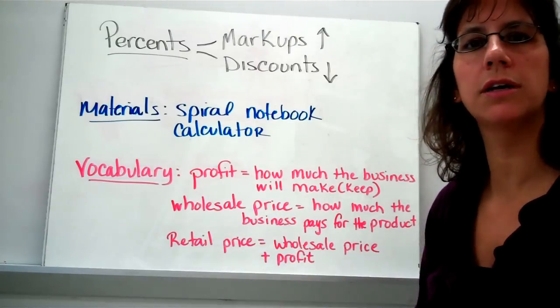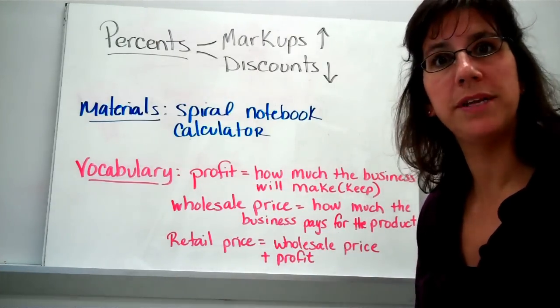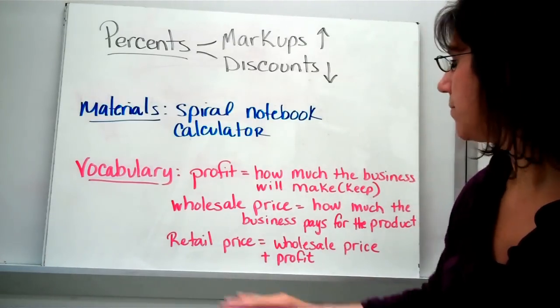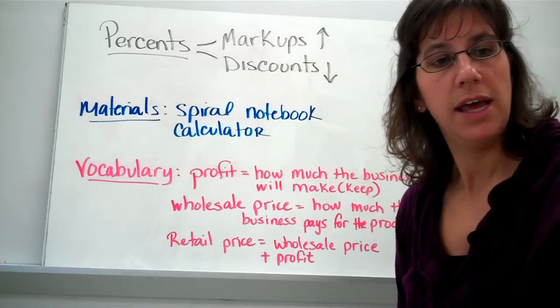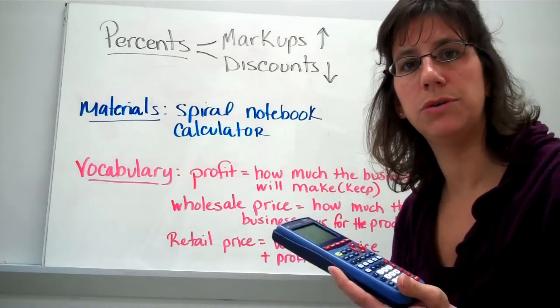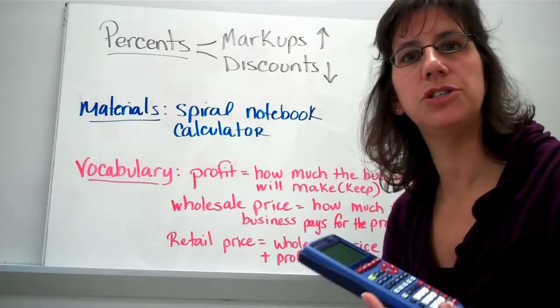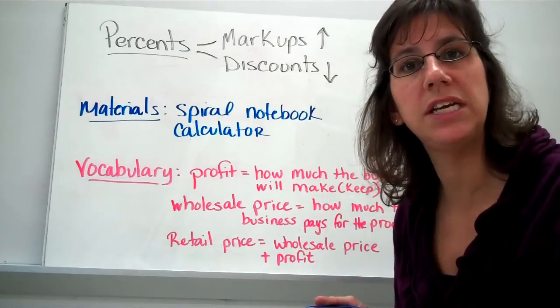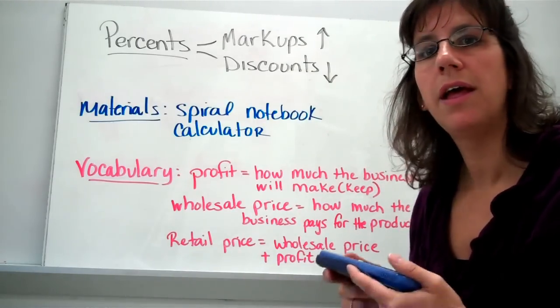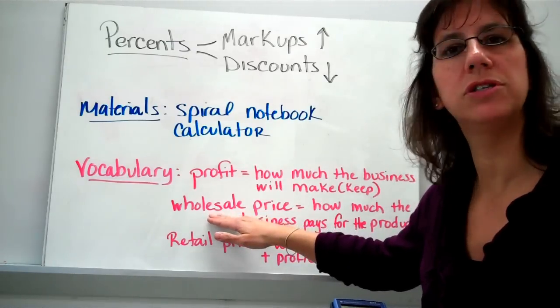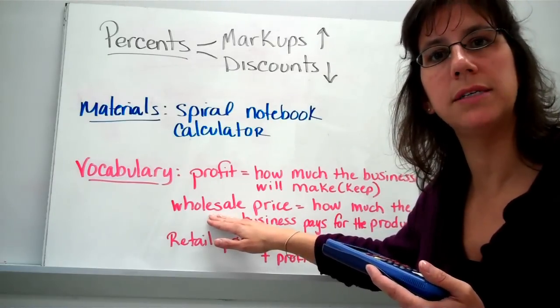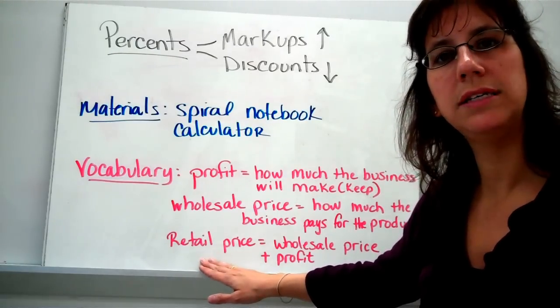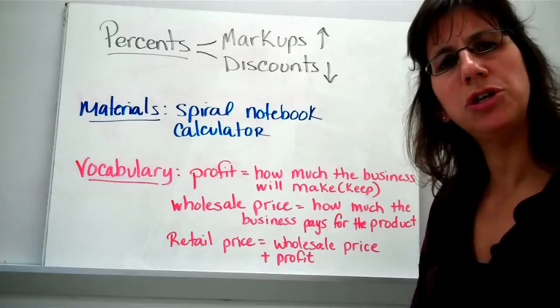Alright, so profit is of course how much a company is going to make. If you are a profitable business, you are making a lot of profit. You are really earning money for your business. Wholesale price is how much the company actually pays for the product. If a company is buying this calculator and going to sell it to you, they're not going to buy it for $10 and sell it to you for $10. They wouldn't make any money in that deal. They might buy it for $10 and sell it to you for $15 so that they can make some extra money. That's the profit. The wholesale price is how much they actually purchase it for, $10 is the wholesale price. I'm going to make a profit of $5 and sell it to you for $15. The retail price is how much I'm selling it to you for. Make sure you understand those words.